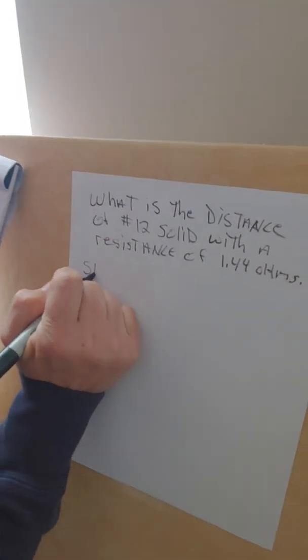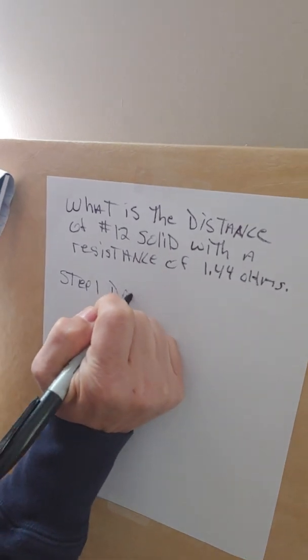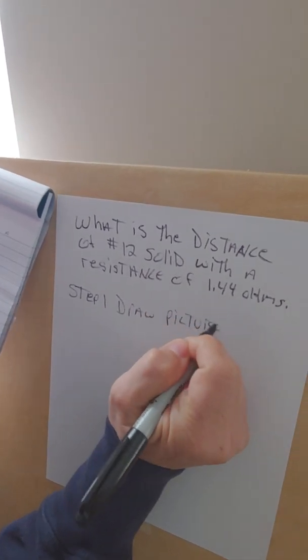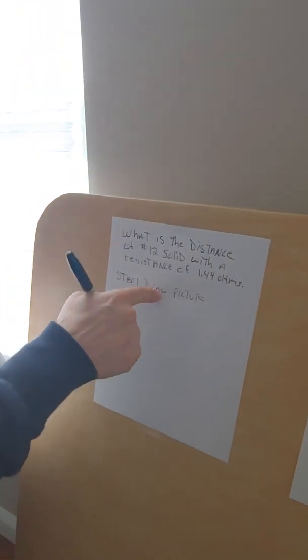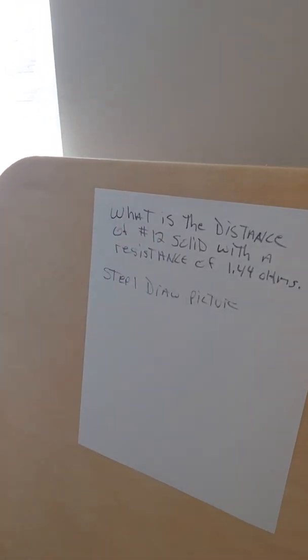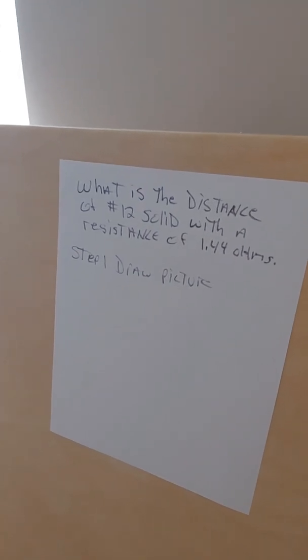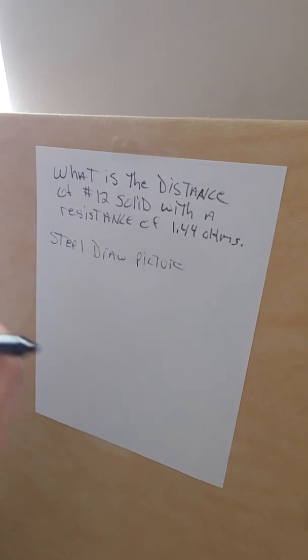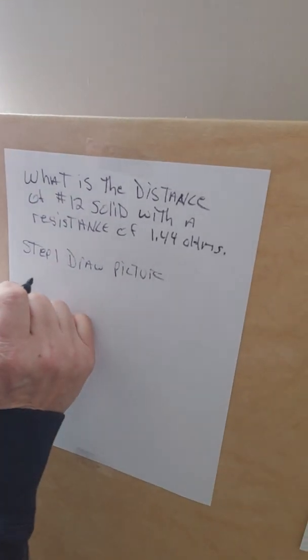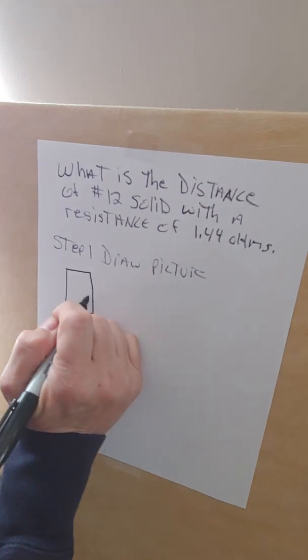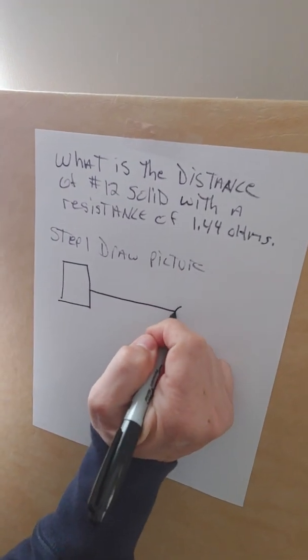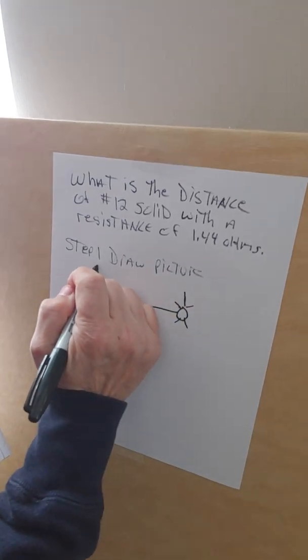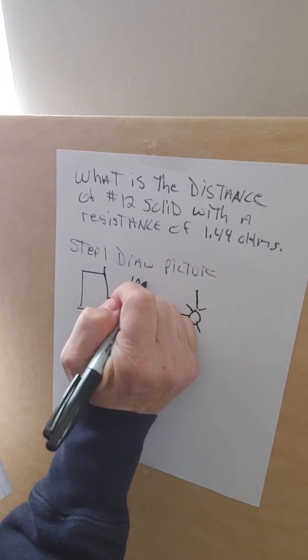Step one, draw a picture. I'm going to get another sharpie. We're going to draw a picture. First I want to show your panel and this is a light, and we know from here to here is a thousand feet.